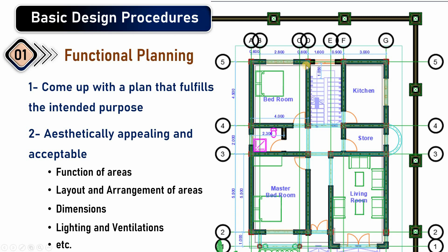At this level, the architect is responsible for deciding the function of areas — where bedrooms will be, how many are required, the kitchen and its orientation and location. The relation and arrangement of rooms with one another must be decided based on experience and knowledge. The architect must also decide room dimensions and ensure that natural lighting and ventilation are accessible to each room.